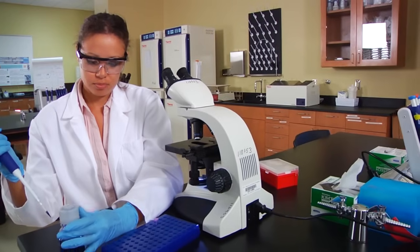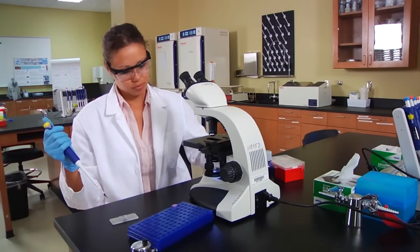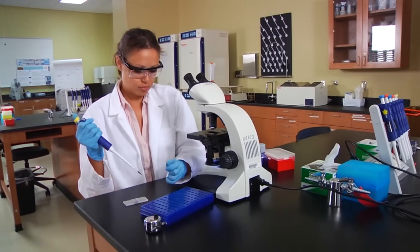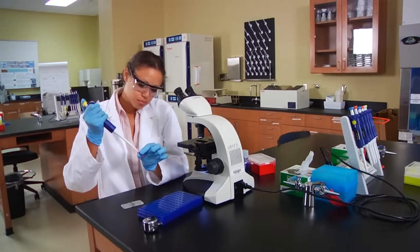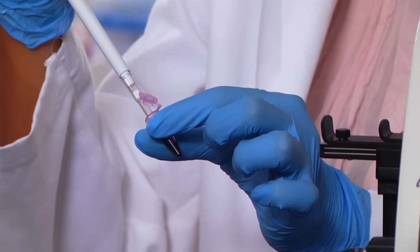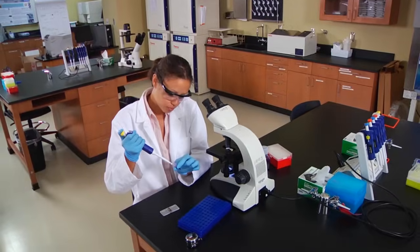Trypan Blue is a dye that helps us distinguish between living and dead cells. The dye passes through the membranes of dead cells so they will appear blue under a microscope. Living cells exclude the dye and will appear mostly clear.